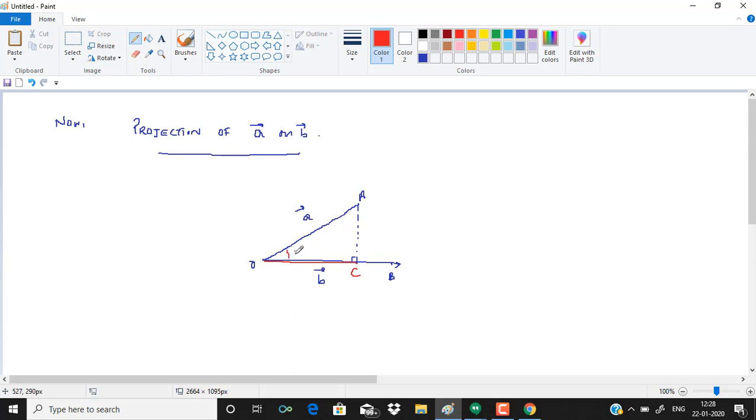So what we need to find is the projection of A on B. If I take angle between them as theta, then OC upon OA magnitude is cos of theta. So OC is OA times cos theta. If we recall the formula of dot product, cos theta was A dot B upon magnitude of A magnitude of B.